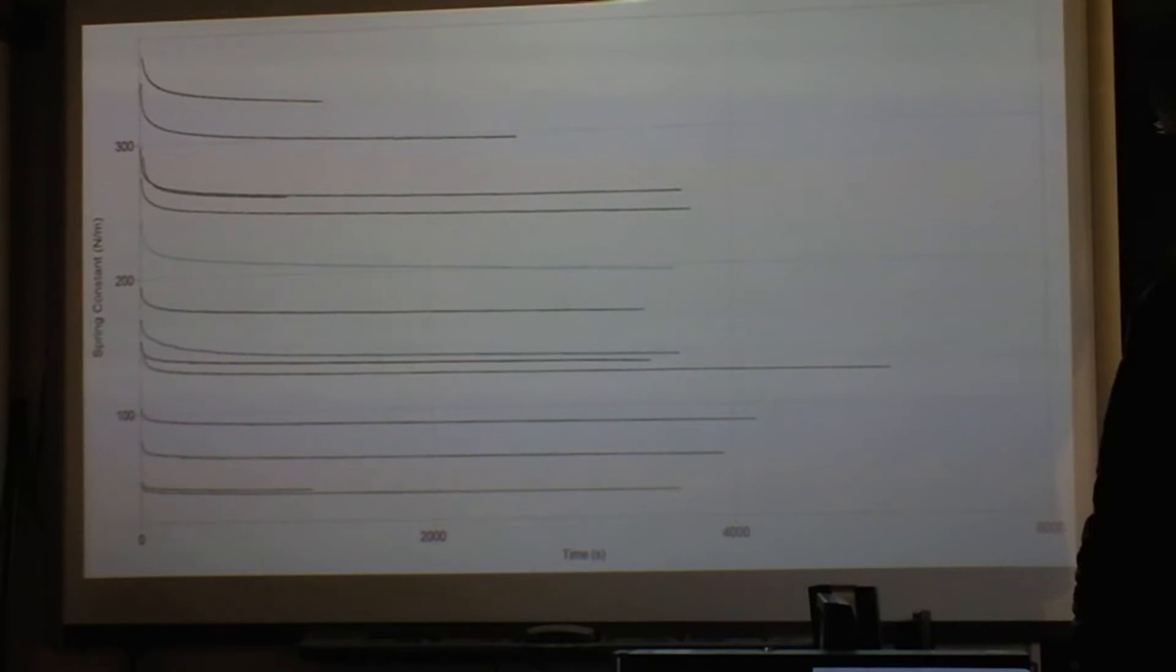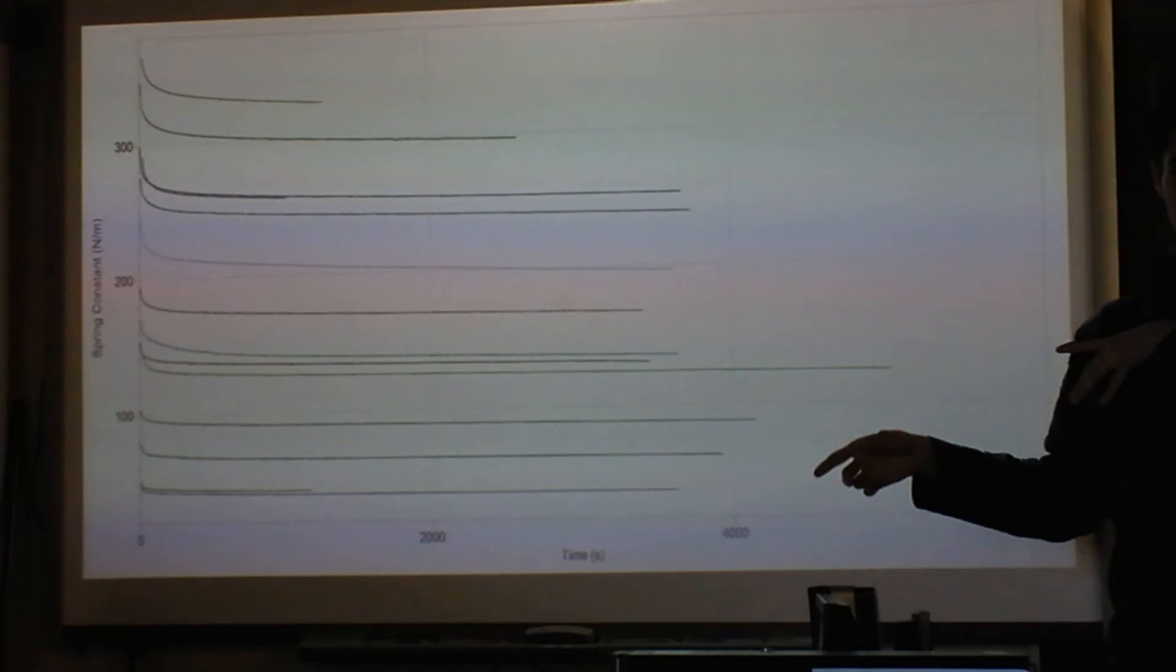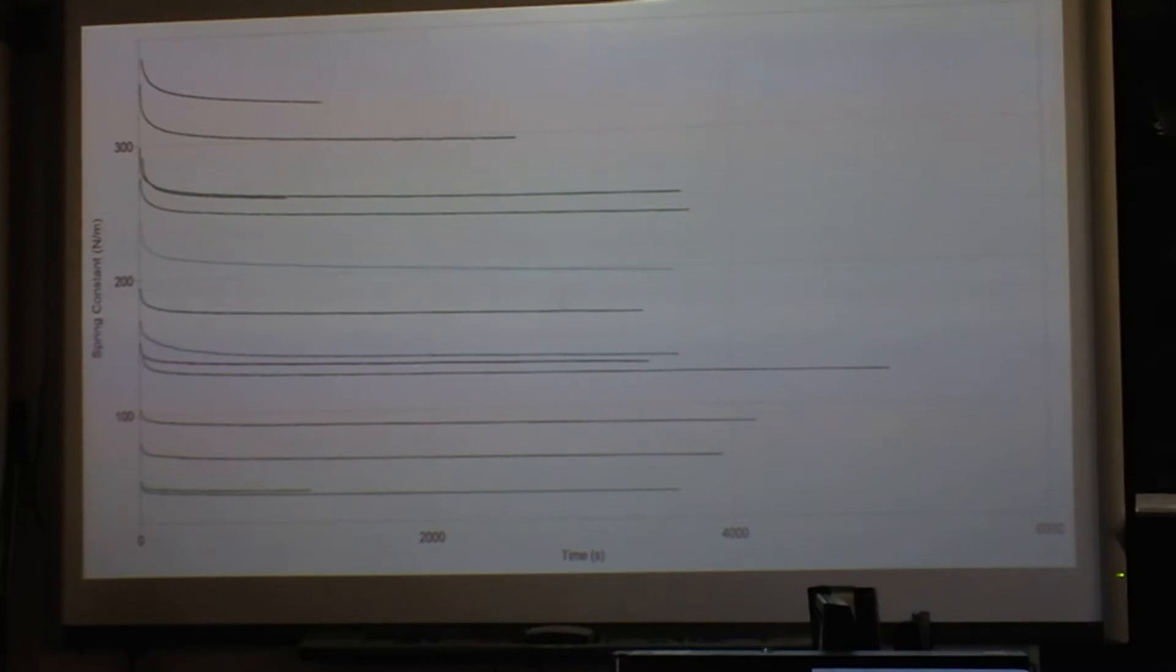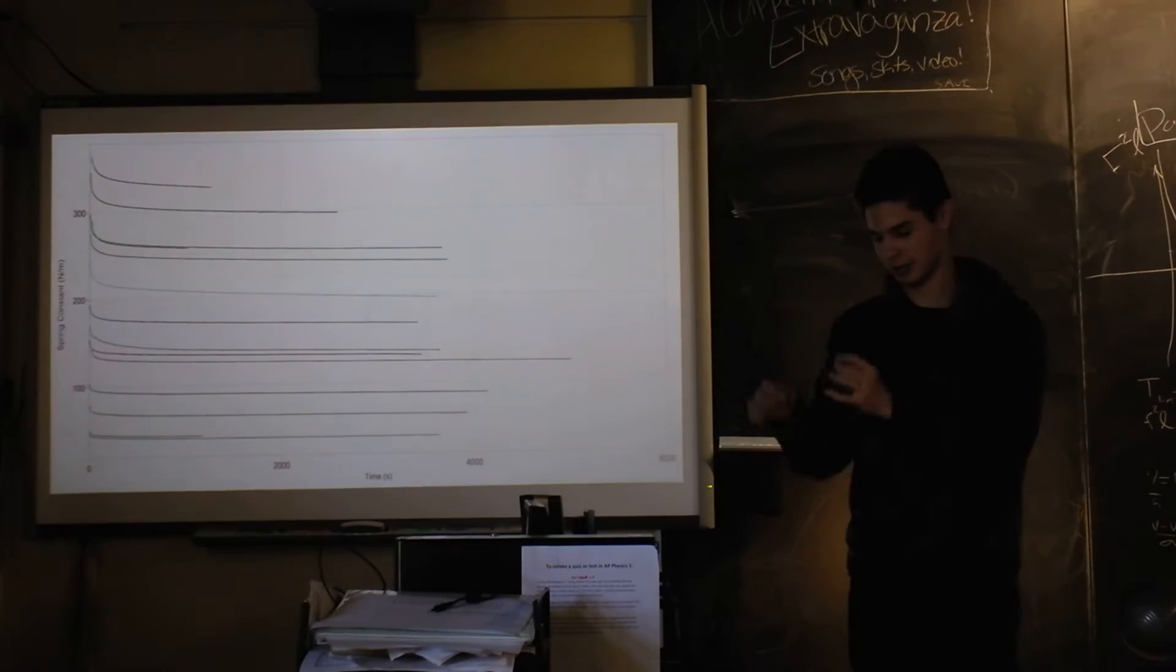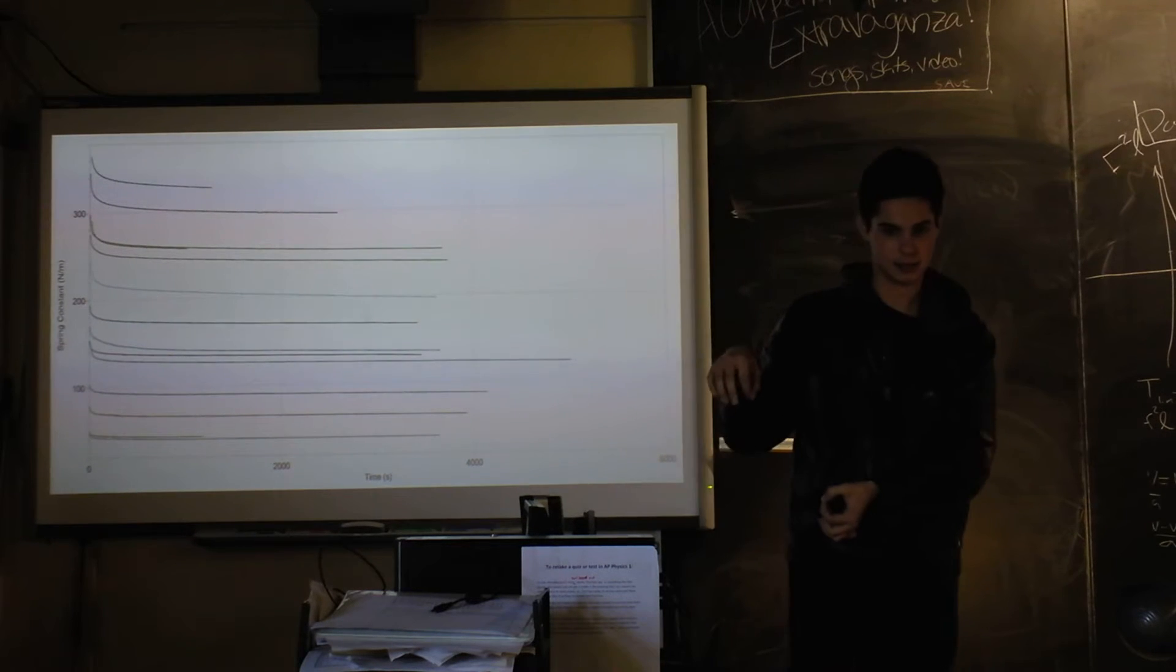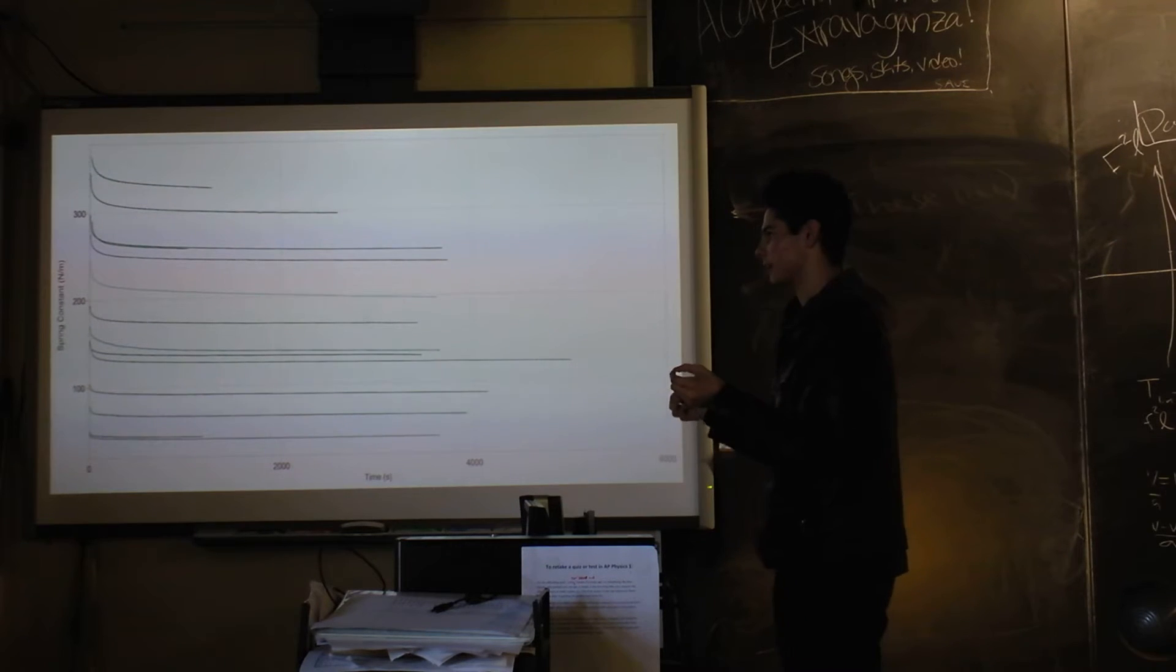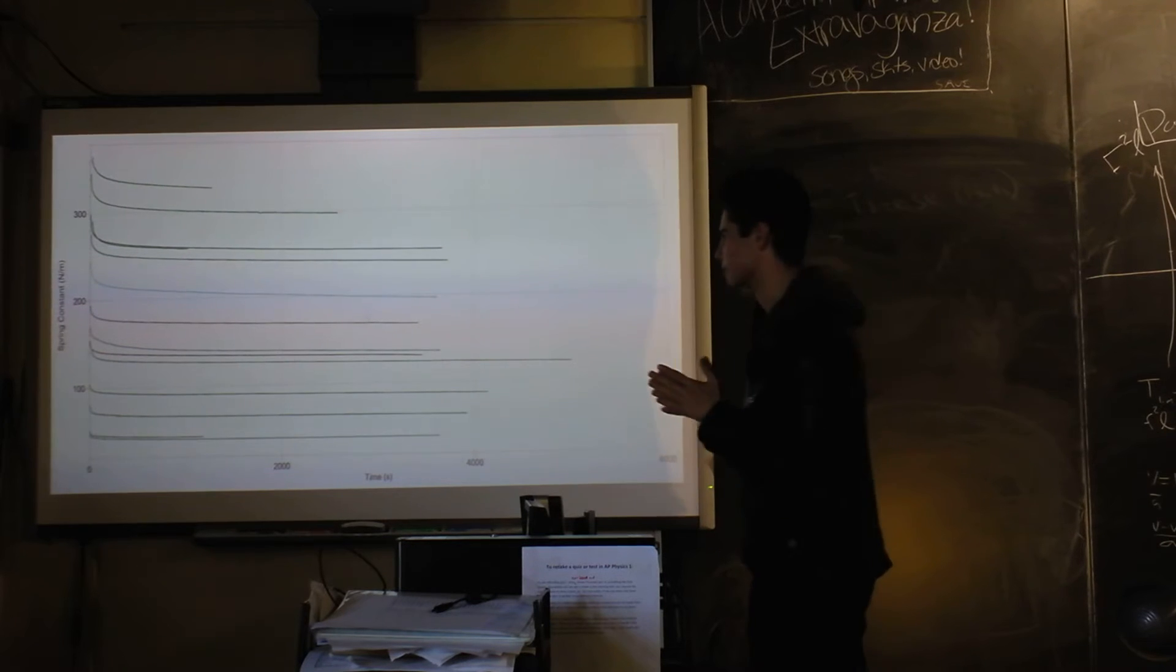This is the spring constant as a function of - I'd have to explain my setup first. There was a hook on the floor anchored, and there was a force sensor. Each rubber band experienced a constant displacement, and I just divided the force reading by that displacement to get spring constant.